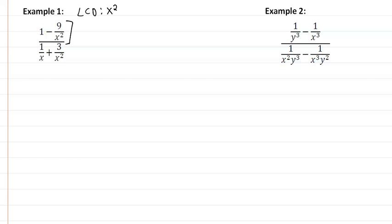So we multiply our first or top by x squared, multiply the denominator by x squared, and we're going to get x squared minus 9, all over x plus 3.